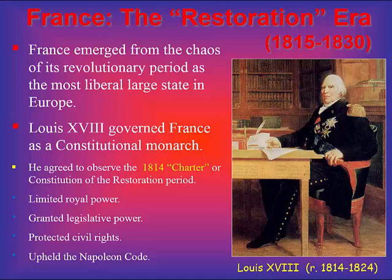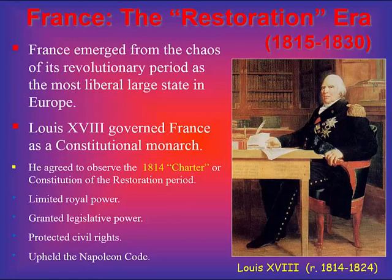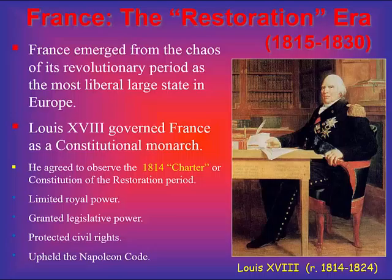The 1814 Charter created limited royal power, a hereditary monarchy, and a bicameral legislature. The monarch appointed the upper house. The lower house — the Chamber of Deputies — was elected, but only a small group with a lot of property could vote. This did guarantee the rights enshrined in the Declaration of the Rights of Man, like religious toleration, and did not challenge the property rights of confiscated land from the Revolution.